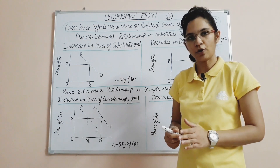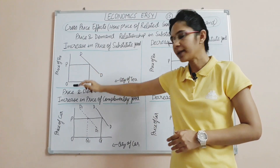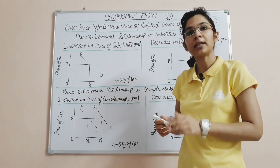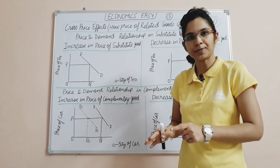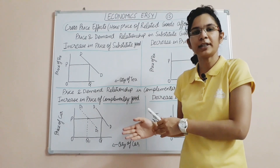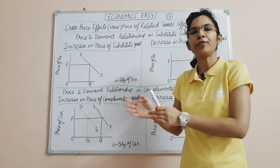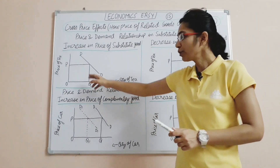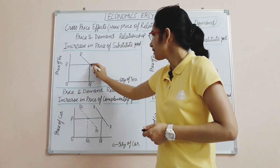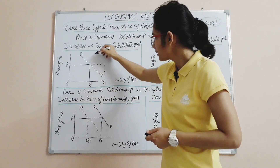OP is the original price, OQ is the original quantity, and DD is the original demand curve. If the price of coffee increases, people will think: why should I pay more for coffee? I will buy tea instead. So the demand for tea increases at the same price — the demand curve shifts rightward to a new demand curve D1, because the substitute good's price has increased.